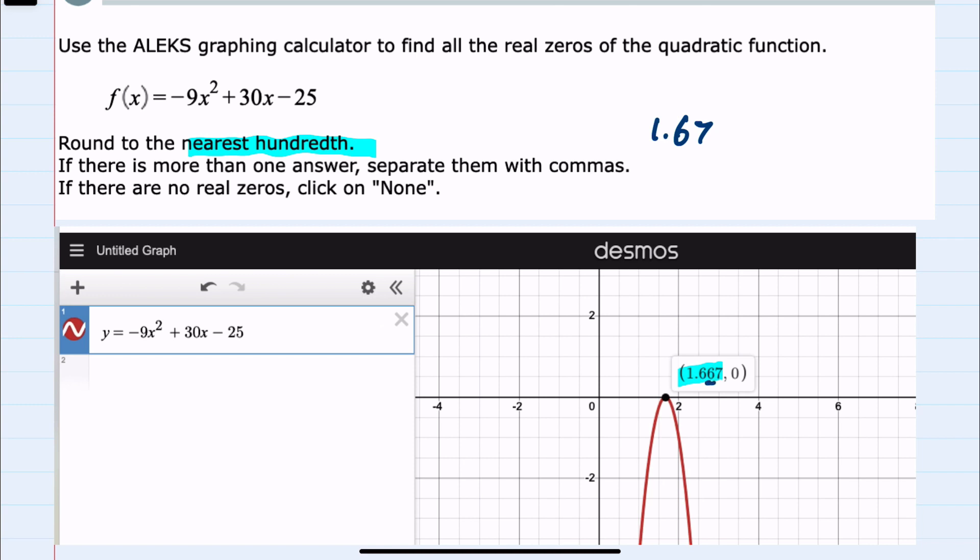This being the hundredths place, so our zero is 1.67 and we only have one because it's barely touching the y-axis.